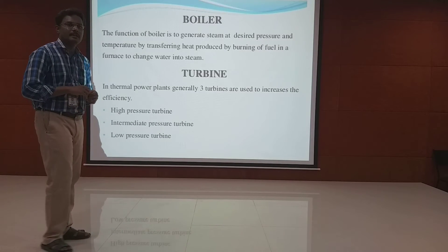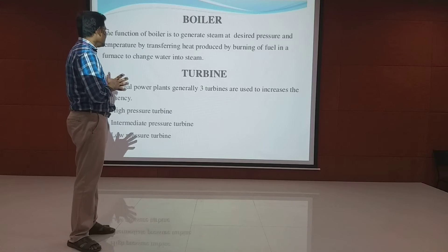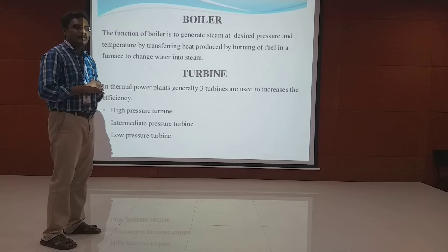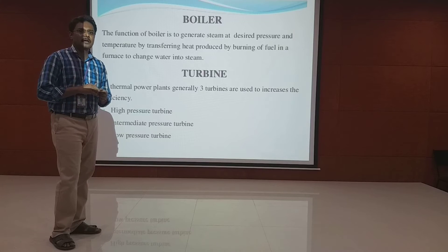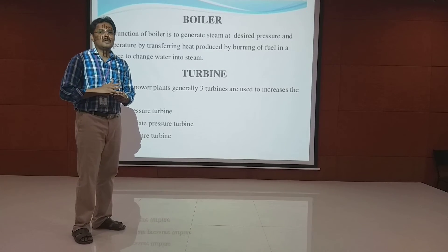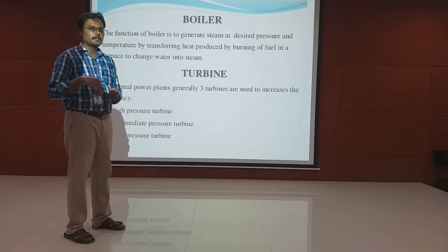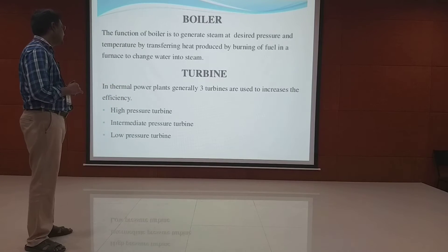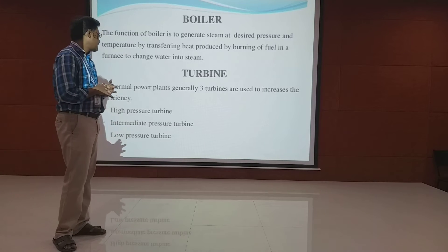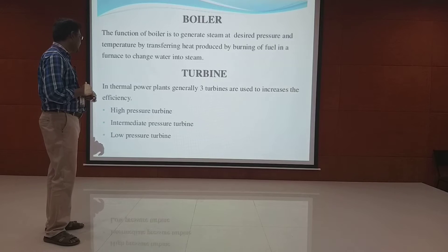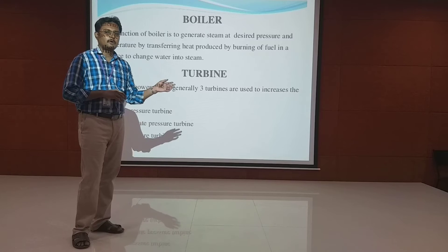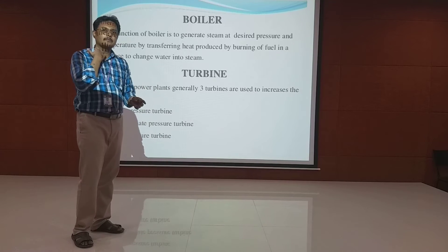The function of the boiler is the generation of steam by means of the combustion process. By burning fuel in the furnace, water in the boiler is converted into steam. For the turbine, three types can be used to increase efficiency: high pressure turbine, intermediate pressure turbine, and low pressure turbine. Depending upon the cost of the thermal power plant, these turbines can be employed.